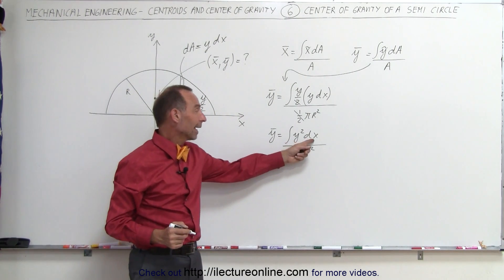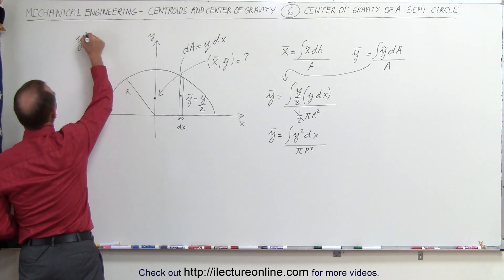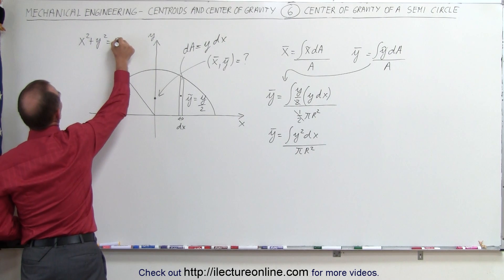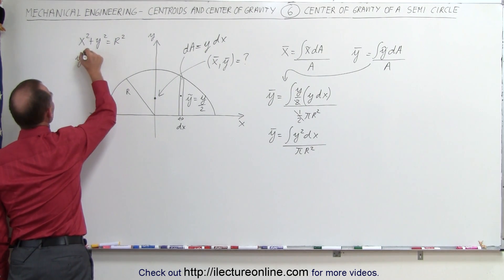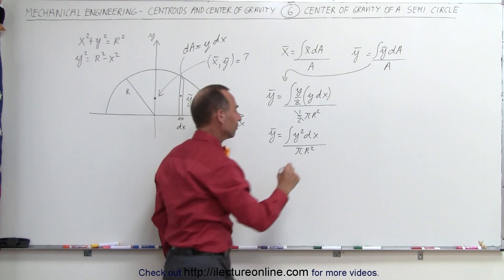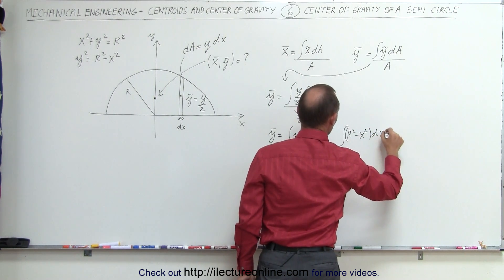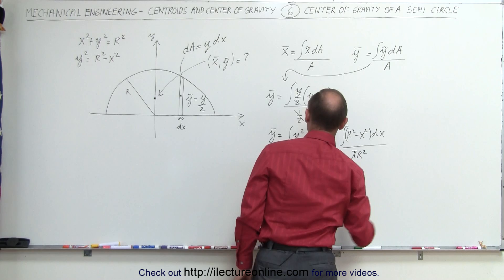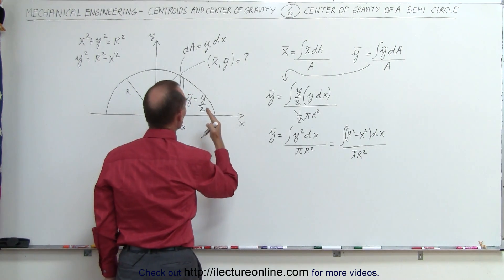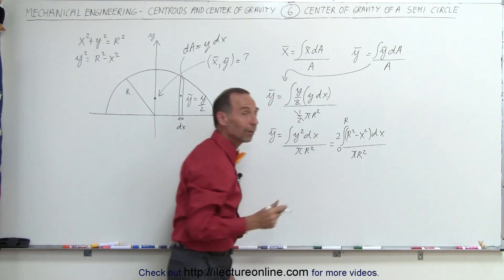Since we have both y and x in the integral, we have to convert y to x. The equation for the circle is x squared plus y squared equals r squared — that's a standard equation. So we can say that y squared can be written as r squared minus x squared, and substitute that into our integral. This gives us the integral of r squared minus x squared times dx, divided by pi r squared. The integral goes from negative r to positive r, or we can take it twice going from 0 to r — multiply by 2 and integrate from 0 to r.